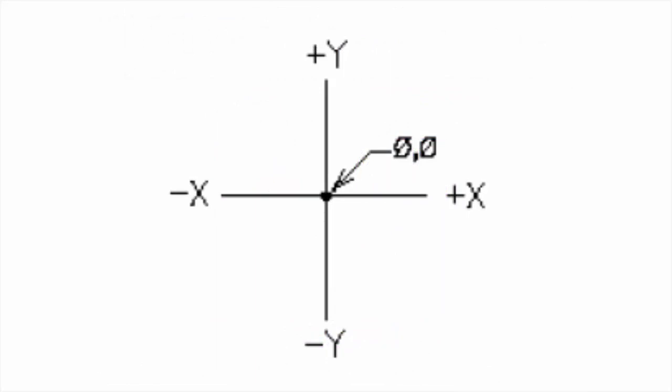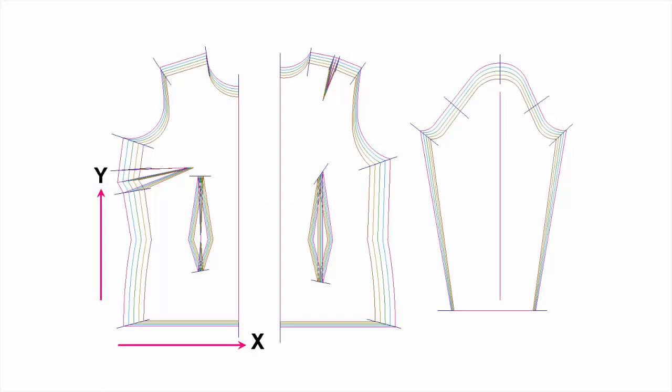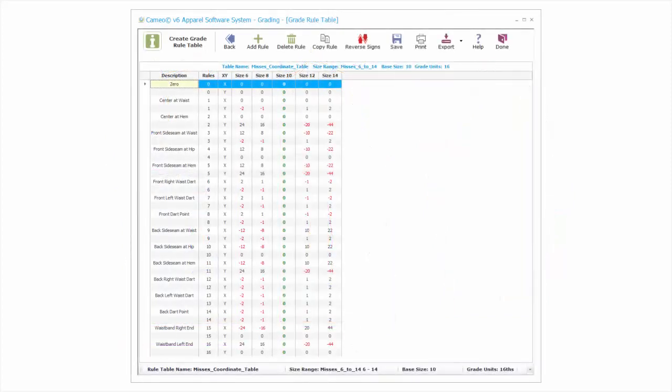CAMEO uses the Cartesian coordinate system for entering precise locations for points that create a pattern. The x-coordinate specifies the location of the point on the horizontal axis, which changes the width of the patterns. The y-coordinate specifies the location of the point on the vertical axis, which changes the height of the patterns. A chart, or grid, called the grade rule table is where these grade rules, or x-y coordinates, reside.